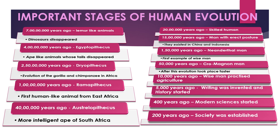10,000 years ago, wise man started practicing agriculture. Only 5,000 years ago, writing was invented and history started being documented. 400 years ago, modern sciences started. 200 years ago, a society like the type we live in today was established. Today, man is evolving faster and faster — evolution is taking place much faster now than it was 7 crore years ago.